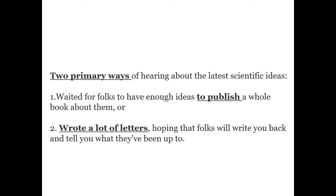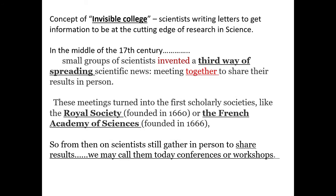So mainly these two ways — one is to publish a book, another is to write a letter asking for information — were how 17th century scientists communicated with each other. There is a concept called the 'invisible college,' which means scientists writing letters to each other to receive information in order to be at the cutting edge of research in science.